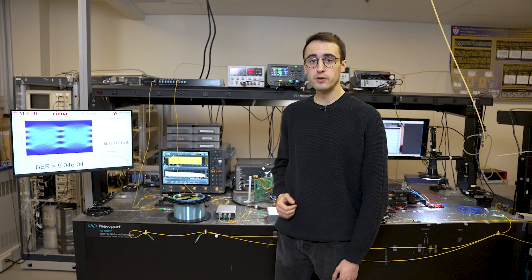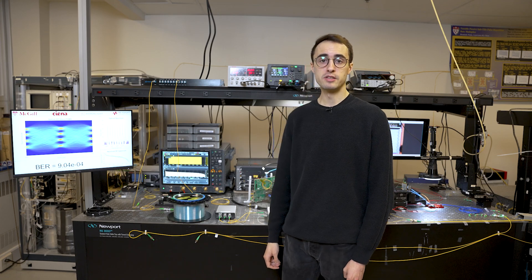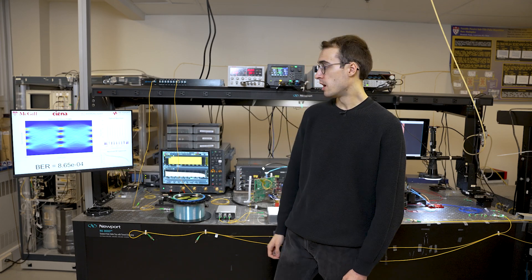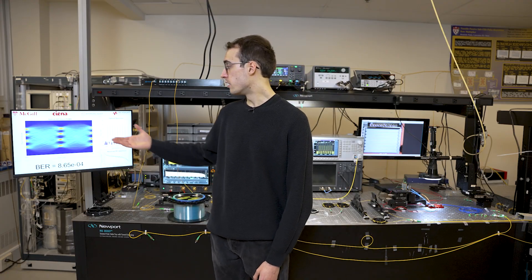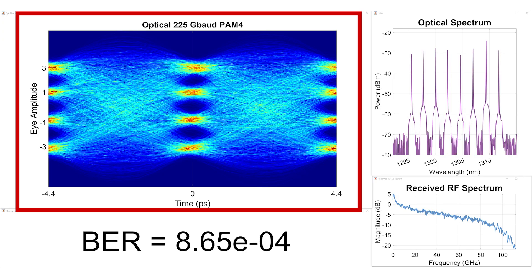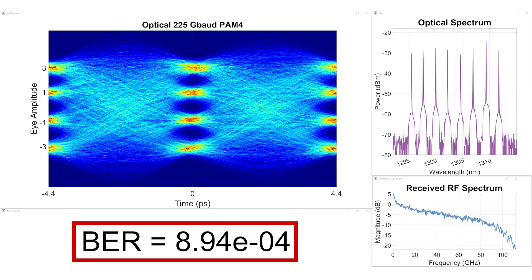Finally, we use McGill's receiver digital signal processing codes to decode the signal. We show here impressive results after 500 meters of fiber where we show an optical 225 gigabaud PAM4 eye diagram where open transitions are visible. We also have a bit error rate under the hard decision forward error correction threshold.